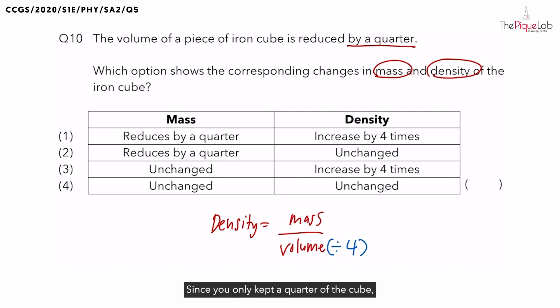So do you think the mass of the iron cube changes? Definitely. Since you only kept a quarter of the cube, the mass of the iron cube is also quartered. So we have options 1 and 2 correct.